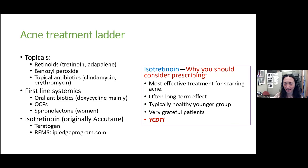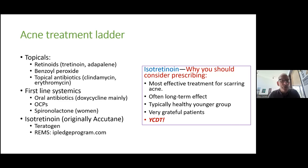Question in the chat: if using a combined oral contraceptive with drospirenone — a fourth-generation progestin like Slind — is there any additional benefit of spironolactone, or is that redundant? Spironolactone is working more at the anti-androgen receptor level, so I don't think it would be unuseful even in the context of that OCP — I think there's still benefit to spironolactone in addition to any OCP, including that one.